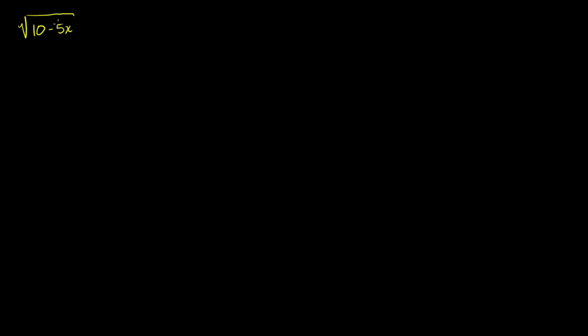Let's do one more radical equation example, and we'll make this one a slightly hairy one. So let's say we have the principal square root of 10 minus 5x plus the principal square root of 1 minus x is equal to 7. Just like I've said over the last two videos, your goal is always to isolate one of the radicals and then square both sides of the equation.